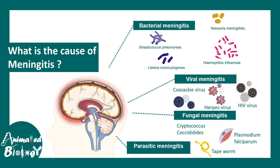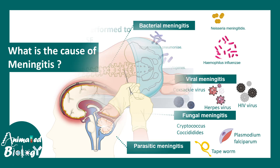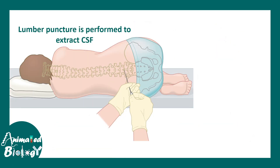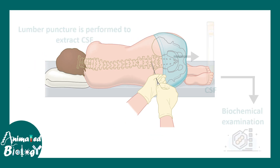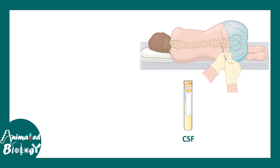Whatever the form, the question is how does a clinician know what is the causal agent behind the meningitis, because in each case there would be inflammation in the meninges. In order to do that, a clinician would look at the CSF profile of the patient. After lumbar puncture, CSF is collected and tested for its biochemical components. CSF profile is very important for understanding many diseases and their pathology.